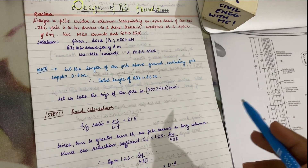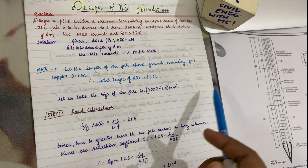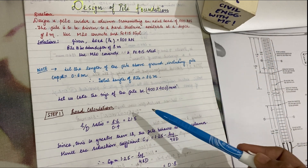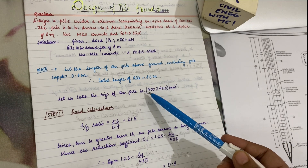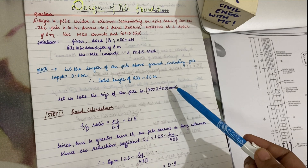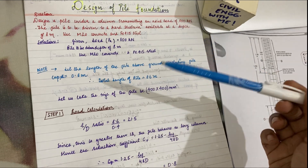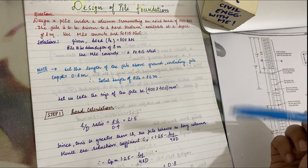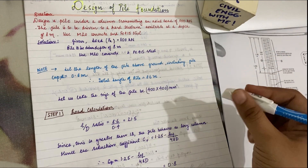We could also take 450 or 250 × 250, but roughly since we have a higher kilonewton load, we can take somewhere between 300, 400, and 500 mm. So let us take the size of pile as 400 × 400 mm.